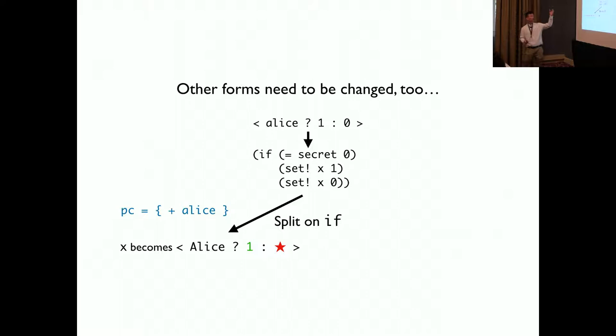We have an example. We pass this facet value Alice 1, 0 into if function, a small part of a function. And we split on if. In x becomes Alice 1 star. Star represents a lazy failure, and we use it as a default value for a set bang. It's a placeholder.